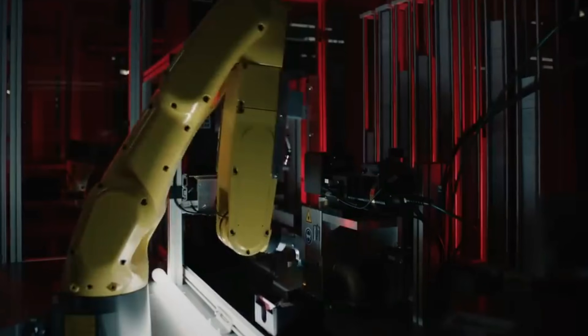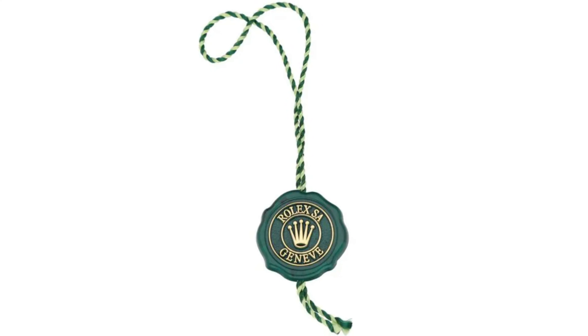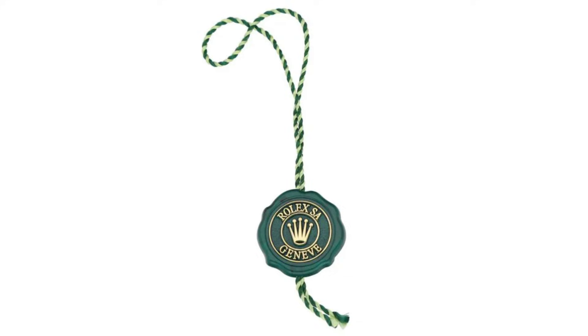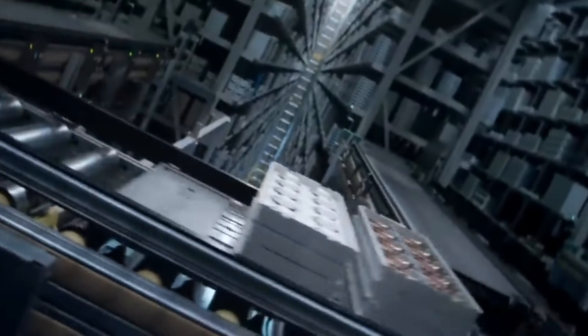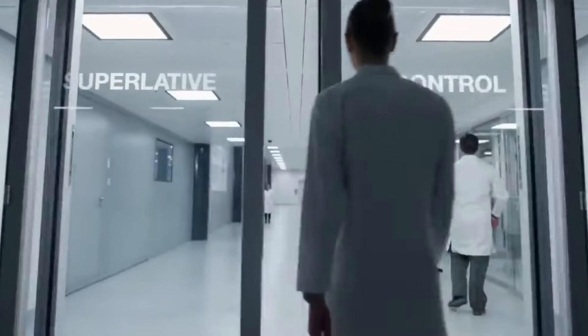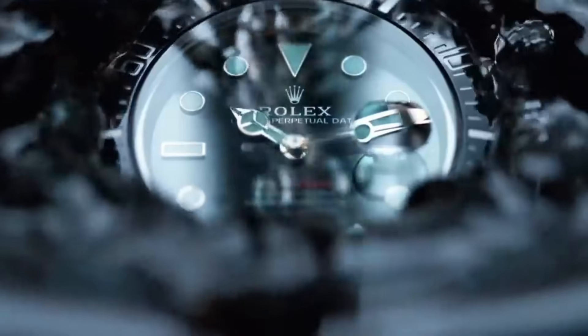For those watches that do pass all the tests, there's one final hurdle – earning the green seal. This seal is Rolex's mark of excellence, signifying that the watch has met their stringent standards and comes with a five-year guarantee. It's the crowning achievement for a timepiece that's been a year in the making.